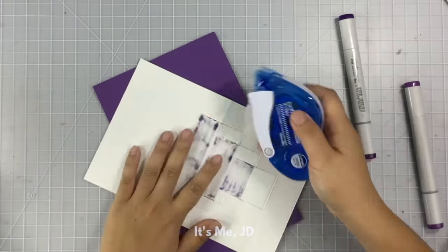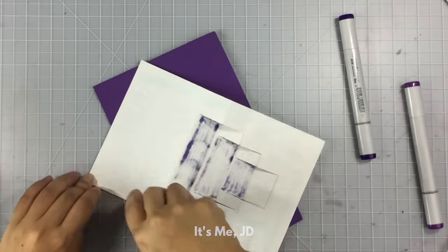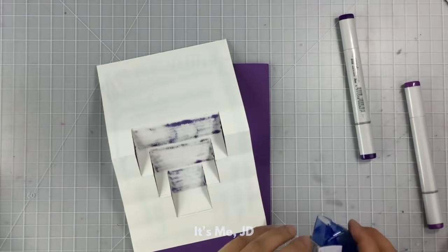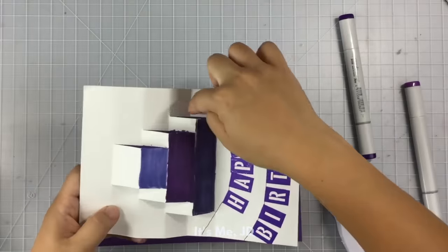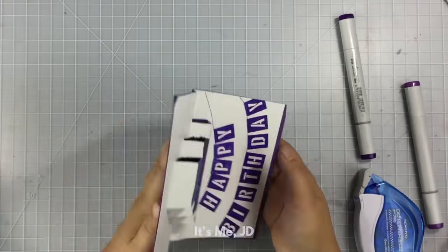After that, I'll use my tape runner and apply adhesive to the back of my pop-up element but not on any part of the cake or the slits that I made. And then I'll match the score line down my pop-up element to the score line of my notecard.